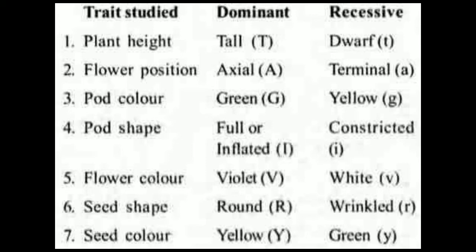Each of these traits has two contrasting forms. For plant height, one is tall and another is dwarf. Flower position can be axial or terminal. Pod color can be green or yellow. Pod shape can be full or constricted. Flower color can be violet or white. Seed shape can be round or wrinkled, and seed color can be yellow or green.